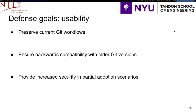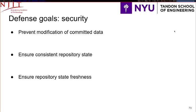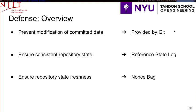We focused on three qualities that, if we provide them, allow us to prevent these attacks and ensure the repository cannot equivocate on the metadata files. Preventing modification of committed data is already provided by Git. Ensuring consistent repository state is provided by something we designed called a Reference State Log. And we added something new called a non-SPAC, which will ensure that the repository presents fresh information.